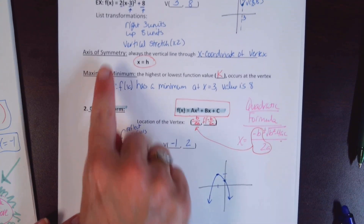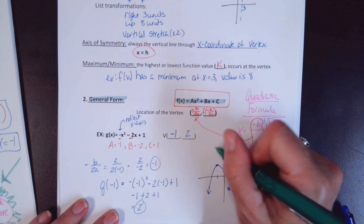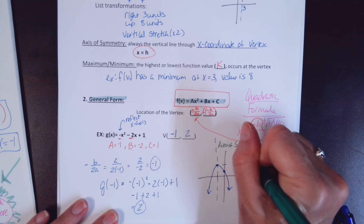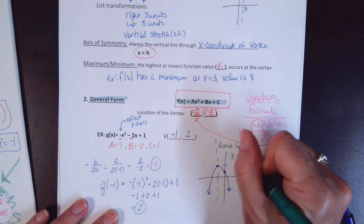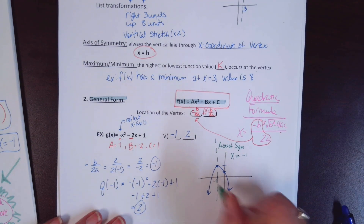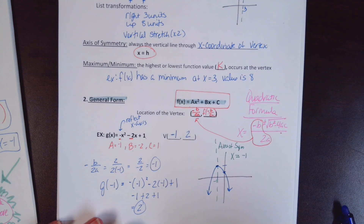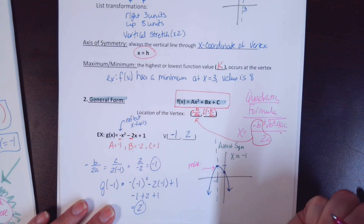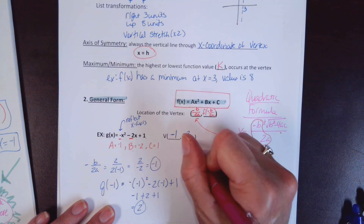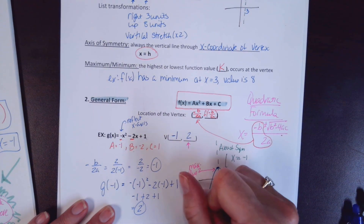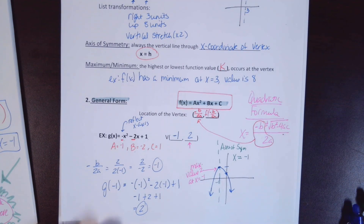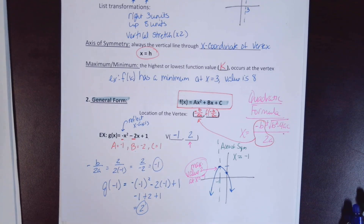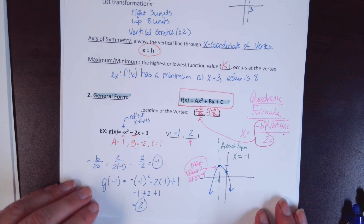The axis of symmetry goes through the vertex, so x = −1. Since the parabola opens downward with a peak at the vertex, we have a maximum. The maximum value of the function is 2, and it occurs at x = −1.